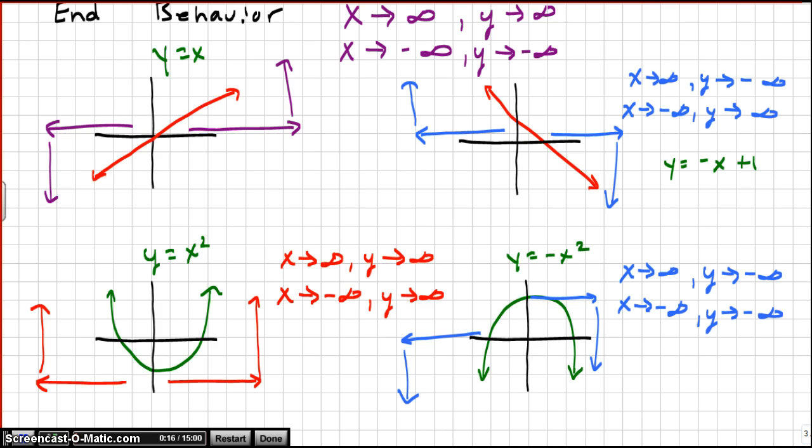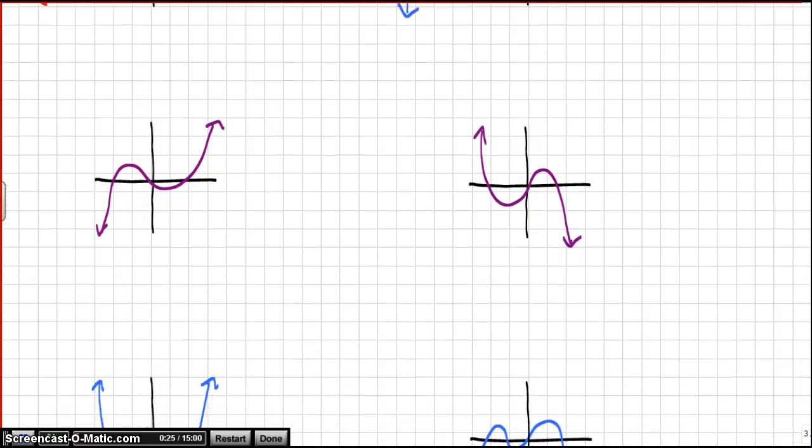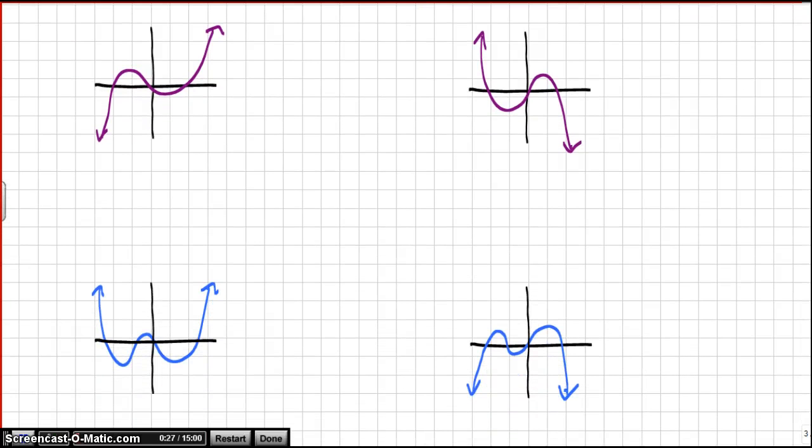Let's look at what happens as x approaches infinity of the linear equation, x approaches infinity of a quadratic equation, and let's look at what happens as x approaches infinity of a cubic and a quartic function. This is just y equals x to the third, and this would be y equals negative x to the third, and this is y equals x to the fourth, and this one is y equals negative x to the fourth.